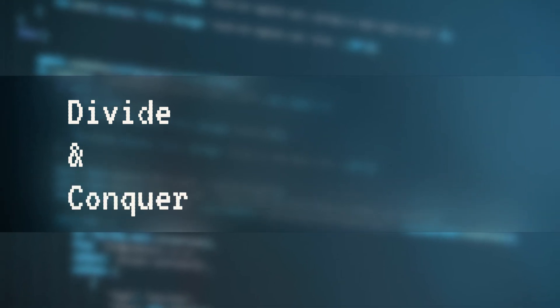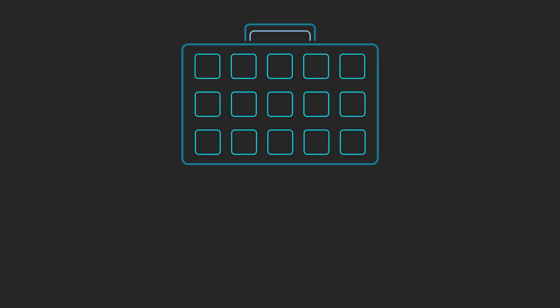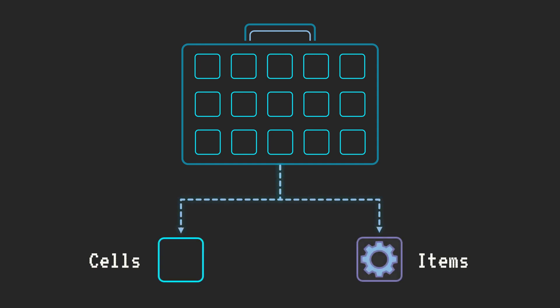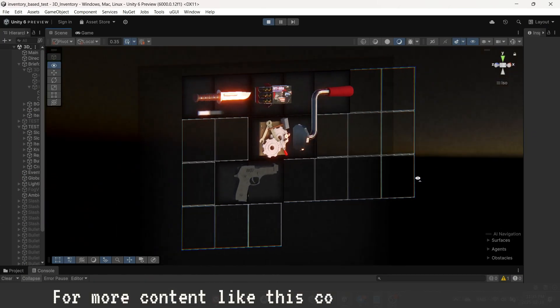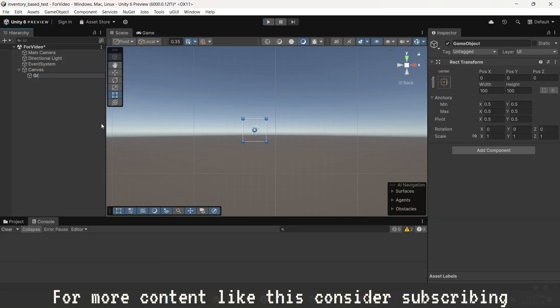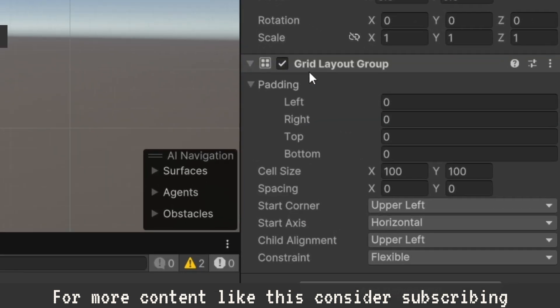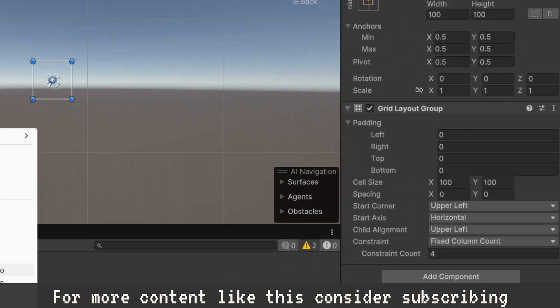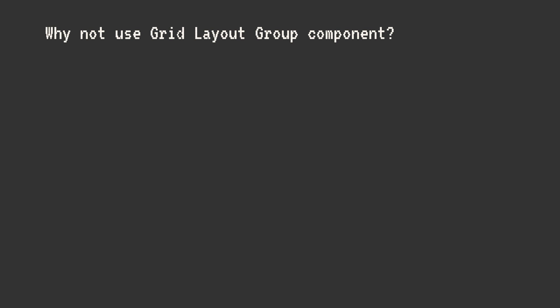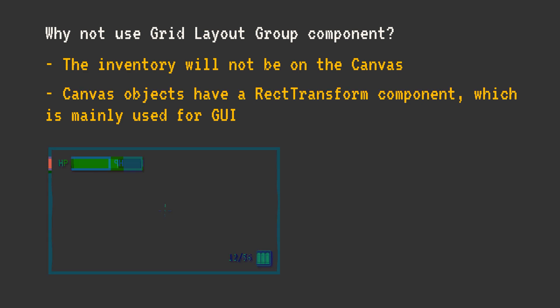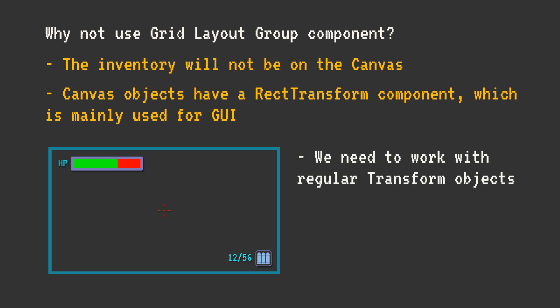First, let's break down the problem. A Tetris-style inventory system consists of cells and items. Let's start with the cells — they function as elements on a grid. Since my goal is a 3D inventory, I decided to create an alternative version of one of Unity's most useful components: the Grid Layout component. This component dynamically arranges canvas elements by defining rows and columns. However, the Grid Layout Group component works with RectTransform components, which are mainly used for GUI. That is why I adapted the Grid Layout Group's core behavior to work with regular transform objects.